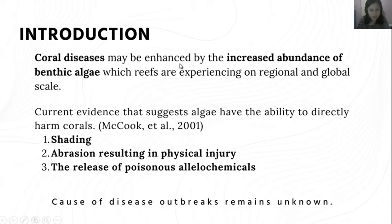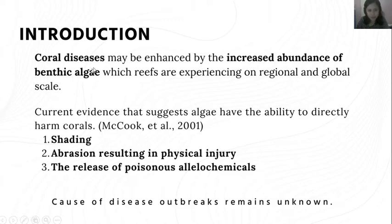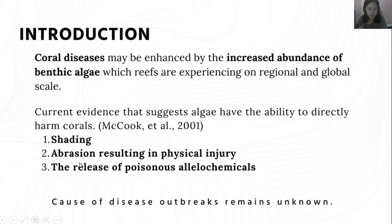In the introduction, the researchers cited many relevant studies about disease outbreaks in corals and the increasing number of environmental stressors such as ocean acidification and rising ocean temperature. They also mentioned the relationship between benthic algae and corals, and how benthic algae can directly or indirectly harm corals. Current evidence, based on McCook et al. 2001, suggests algae can directly harm corals by shading, abrasion resulting in physical injury, and the release of poisonous allelochemicals.